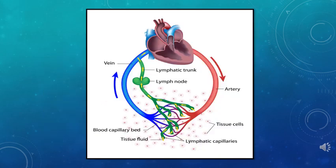The lymphatic system works parallel to the circulatory system. The major purpose of the circulatory system is to bring oxygen and nutrients to the body tissues and remove waste. This exchange happens in small thin blood vessels called capillaries. During this, some watery fluid called lymph filters from the blood capillary walls into the intercellular spaces, or tissue spaces, and it can cause swelling if accumulated. This is where the lymphatic system comes into play — it picks up the excess fluid and returns it to the blood circulation.